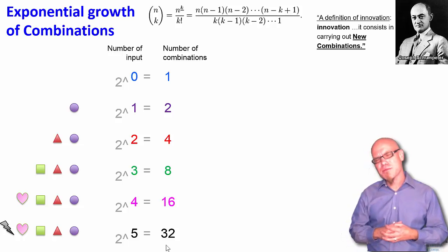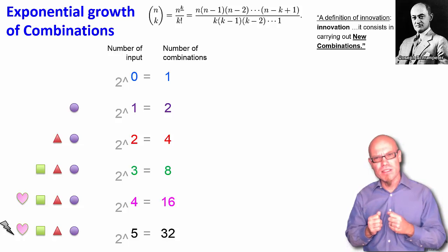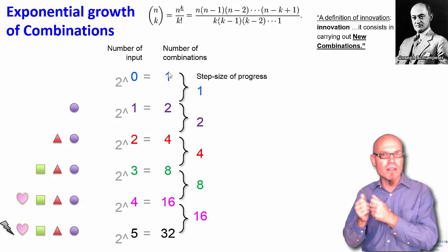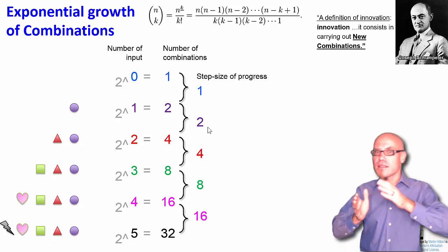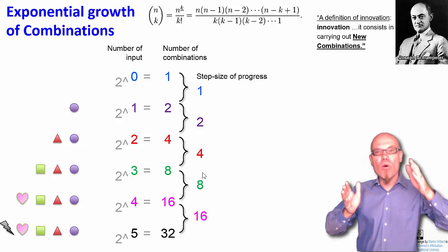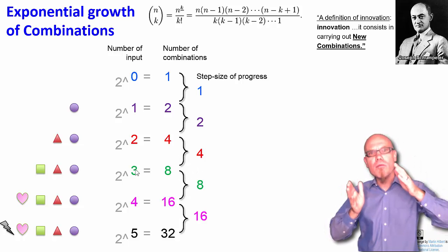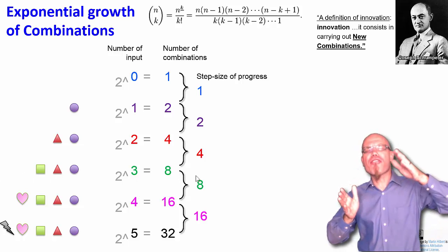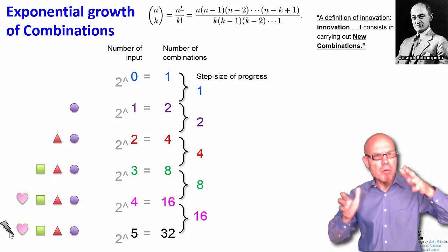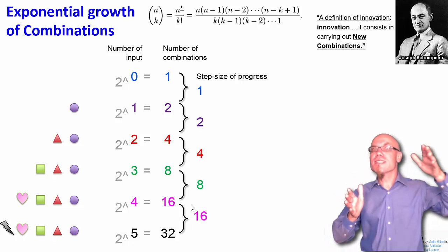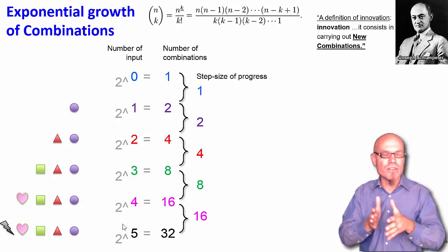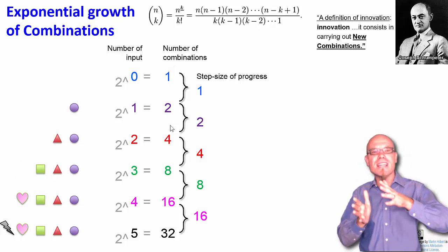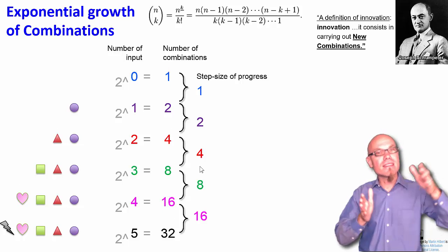One interesting thing to notice about exponential series is the step size of progress. So between the first two steps, between 1 and 2, the step size is 1. Then between 2 and 4, the step size gets 2, then the step size gets 4, then the next step, just by adding one more block of input to combine with, we make a step of 8 already. And then just by adding one additional input block, we make a step of 16. So while we have a linear progression, 1, 2, 3, 4, 5 with regard to the input blocks, we have an exponentially increasing number of steps in the outcome.